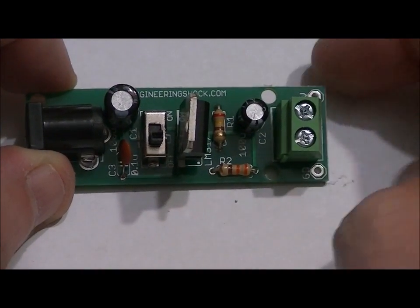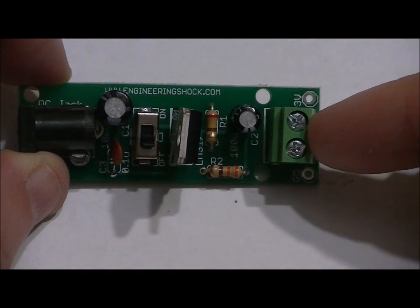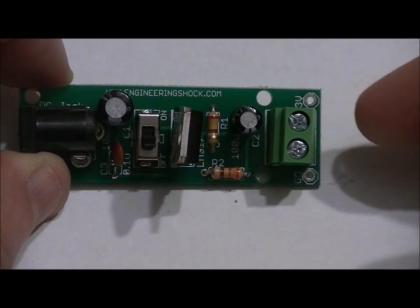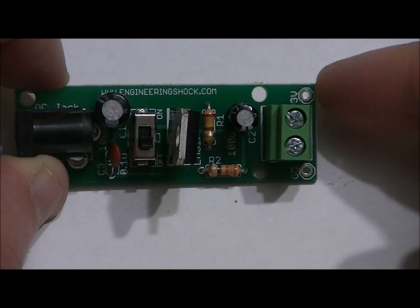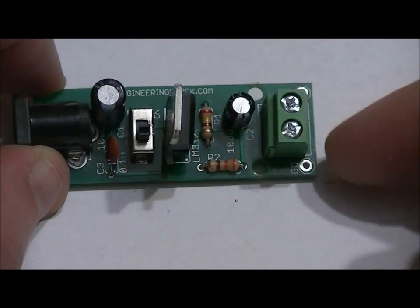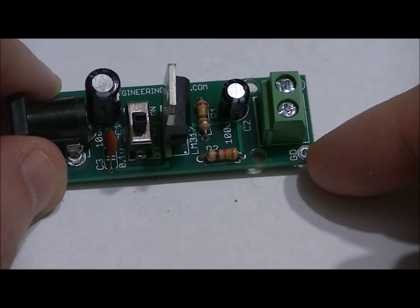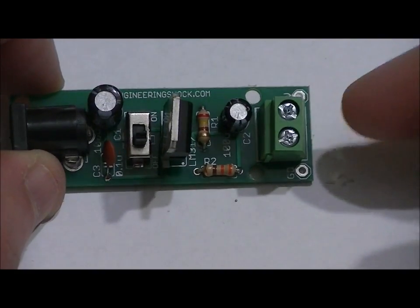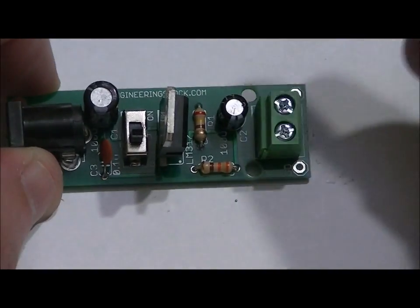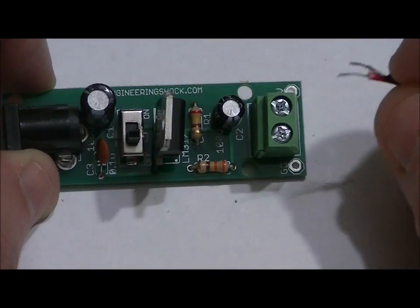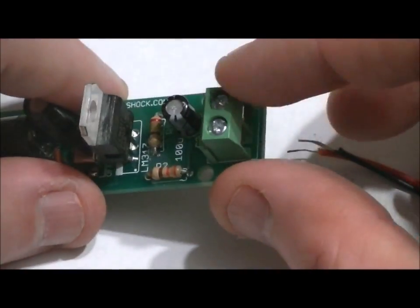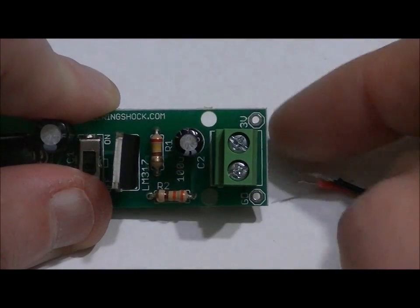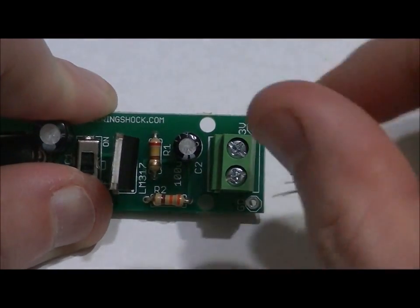And this is our output. What you'll notice is there's a terminal block and there are soldering points. If you want to, you can solder the red wire of your laser to that pad, and a black wire to that pad, GD, which is ground. Black to GD, red to 3 volts. Or, you can take your laser, and you can attach the wires to this terminal block by loosening these two screws, placing the wires in the right holes, red and black, and then tightening.